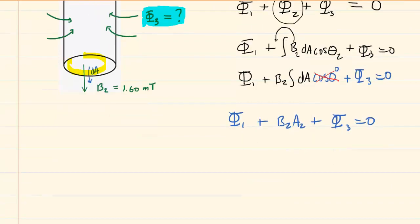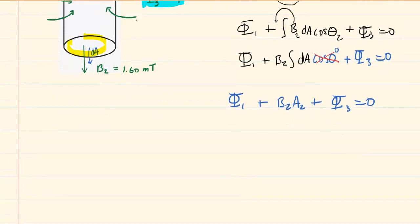Now, we can solve this equation for the third magnetic flux, since that is our unknown, so we'll subtract both of those quantities to the other side. And at this point, we can begin to plug in some of the known quantities. Let's take a look at this quantity right here, which was the magnetic flux that was at the top of the surface.